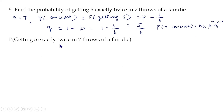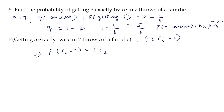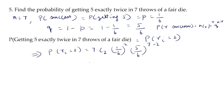Probability of getting 5 exactly twice in 7 throws means r = 2. So P(X = 2) = 7C2 · (1/6)^2 · (5/6)^(7−2) = 7C2 · (1/6)^2 · (5/6)^5, which equals 7C2 · 5^5 / 6^7.